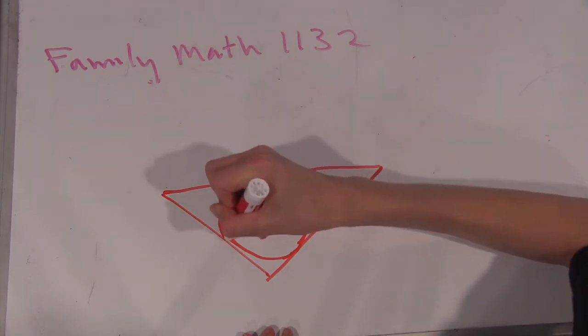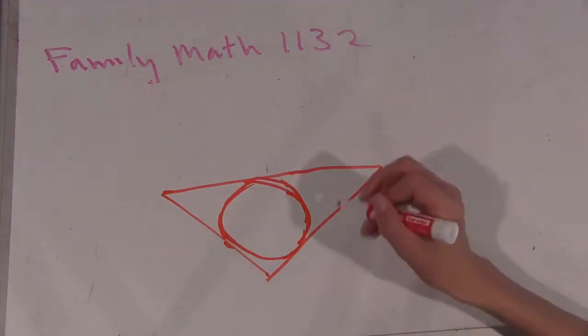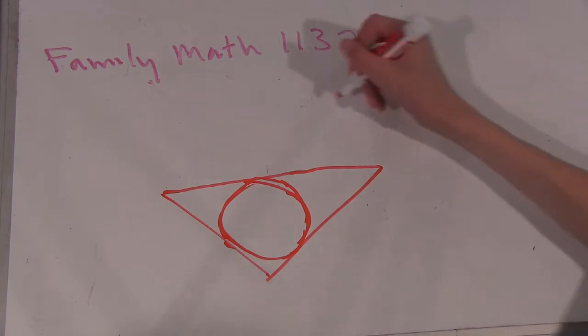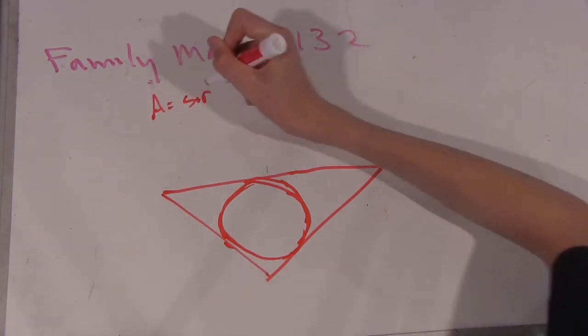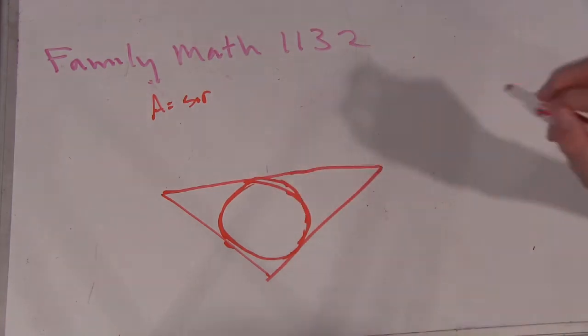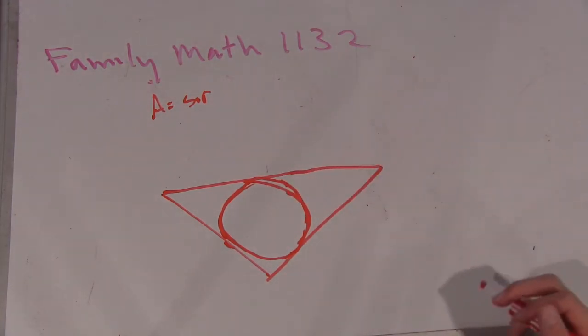Yep, very good. Okay. So where does this formula A equals S times R come from? A equals S times R, and I'll call the radius of the inscribed circle little r. Yeah, where does this formula come from?